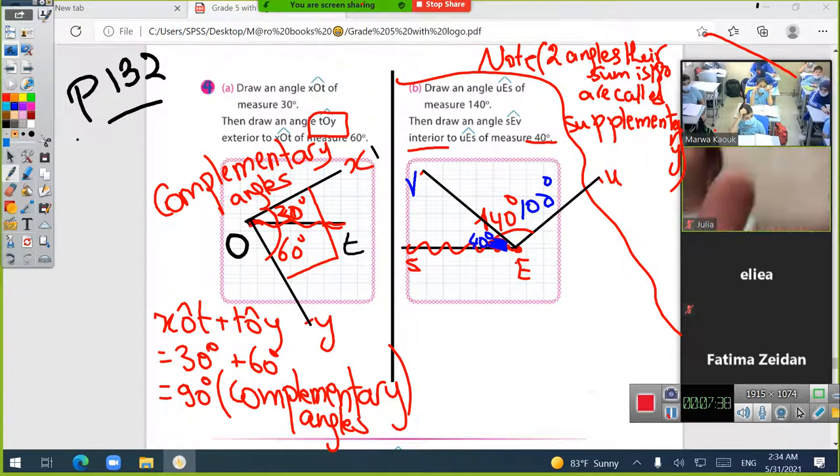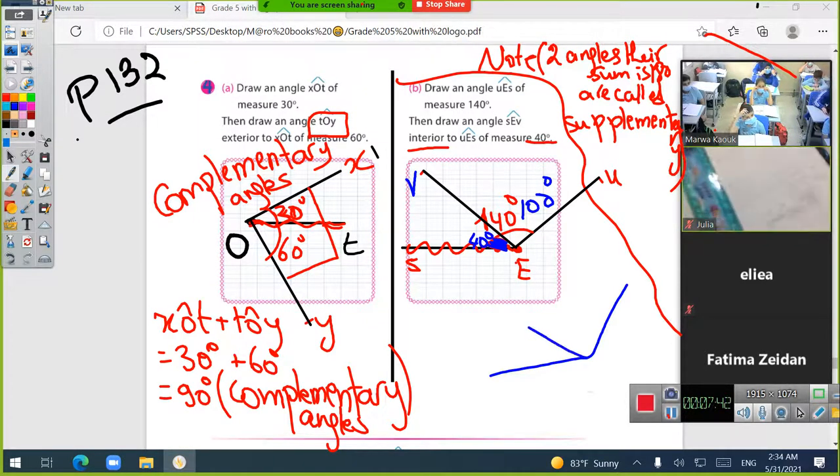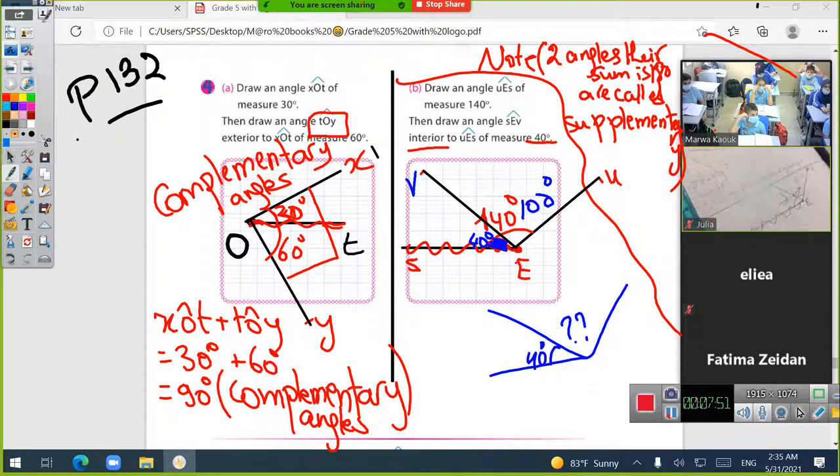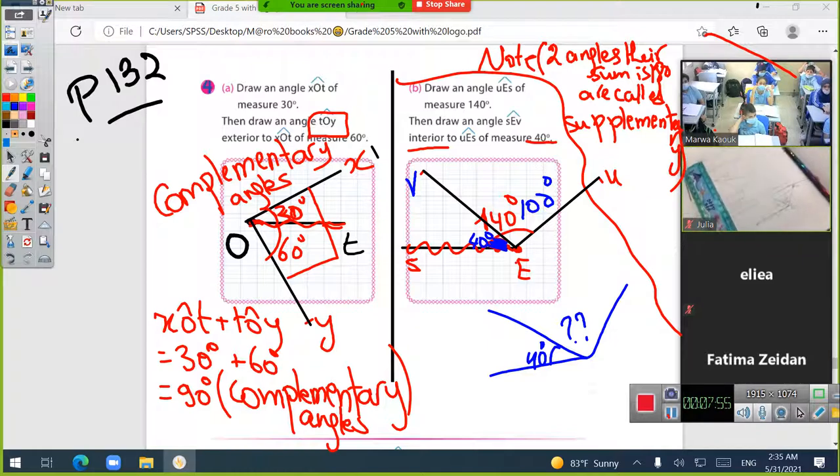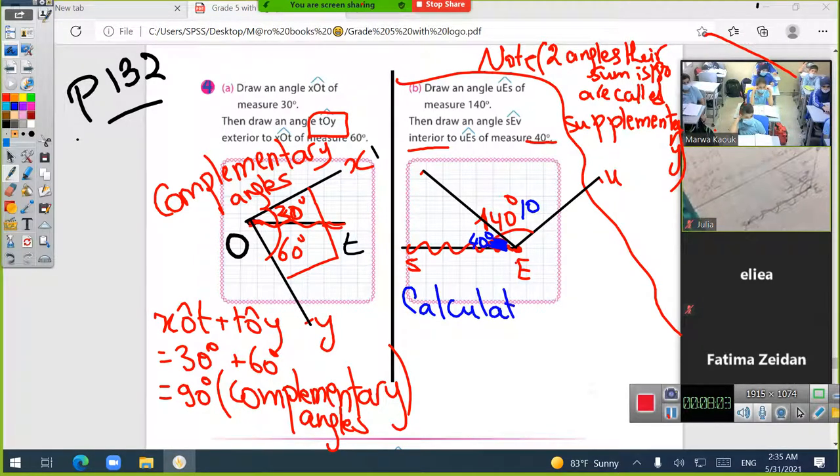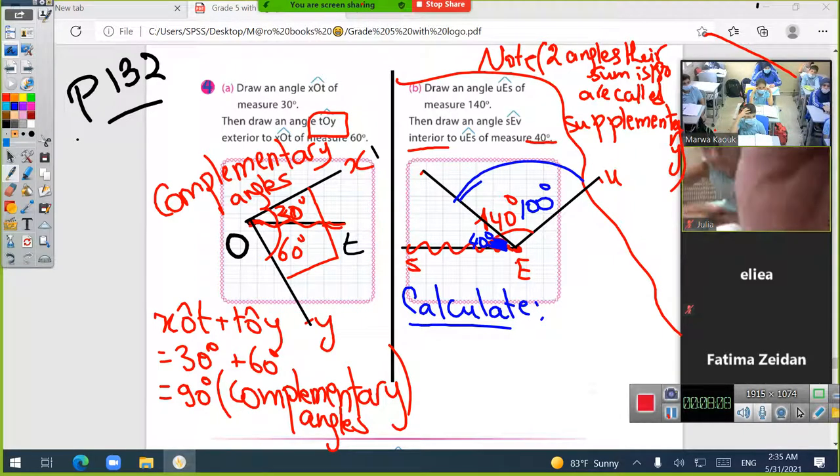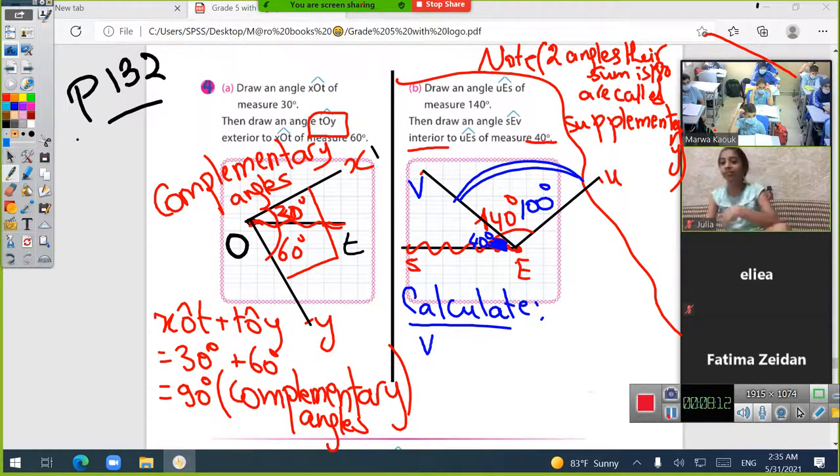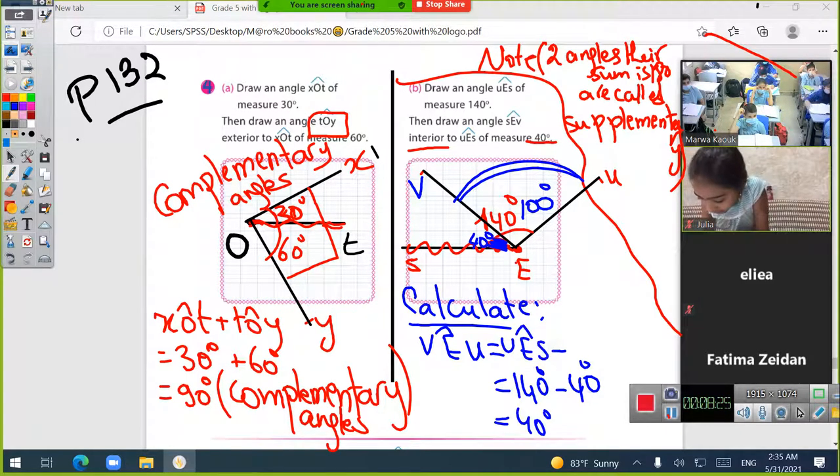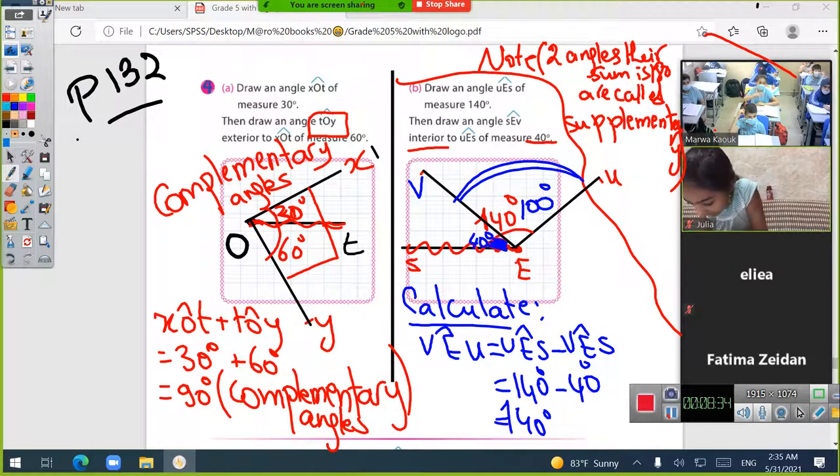I have an angle of 140 degrees. Now I want to calculate this part. I will write the angles by name: UES minus SEB. Since UES is 140 and SEB is 40, the remaining angle is 100 degrees. So 140 minus 40 equals 100 degrees.